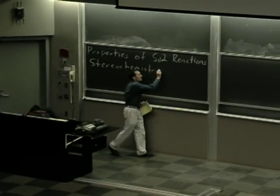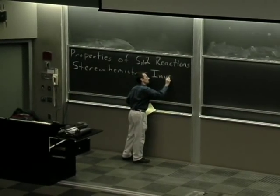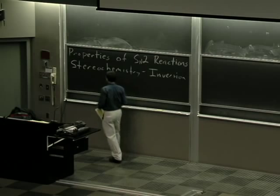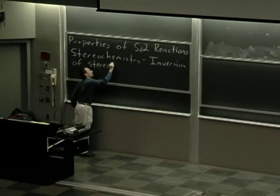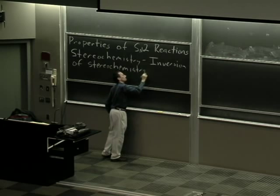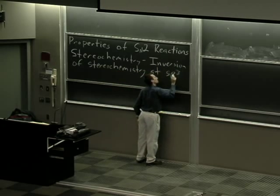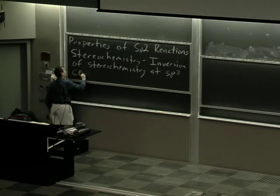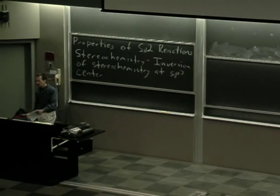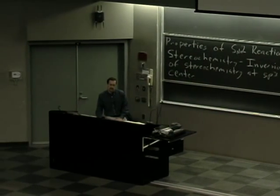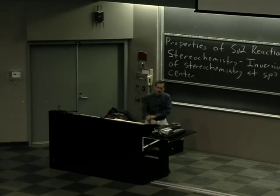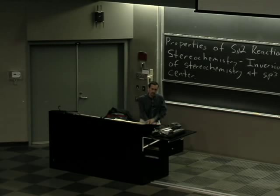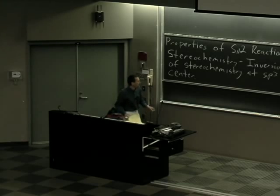We get inversion of stereochemistry at the SP3 center. Almost invariably, this is an issue that's going to come up with a secondary center. It could come up with a primary one if you had a deuterium. In general, SN2 displacement doesn't occur at a tertiary center because of steric hindrance. So in general, we're talking about a secondary center.